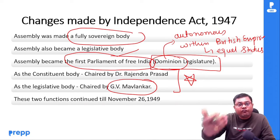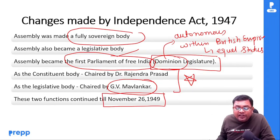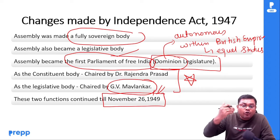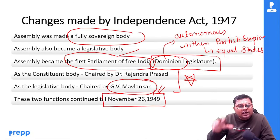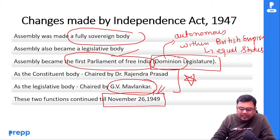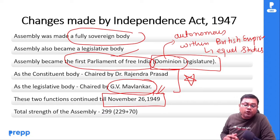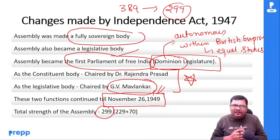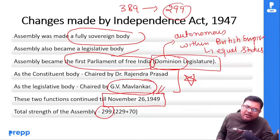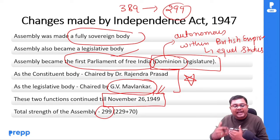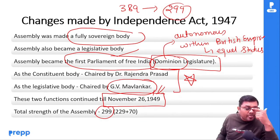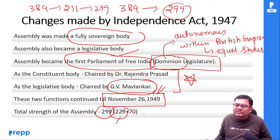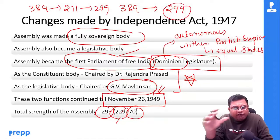26 November 1949 — यही date पाई जाती है in our preamble — यहाँ तक दोनों functions continue होते हैं क्योंकि constitution बन चुका है। Total strength of assembly अब हो जाएगी 299 — जो पहले 389 था। Partition हो गया, तो Muslim League के members जो Pakistan से belong करते थे वो वहाँ चले गए। India वाले members और princely states ने join कर लिया। तो अब 299 members होंगे: 229 from provinces and 70 from princely states। तीन figures याद रखने होंगे: 389, 211, और 299।